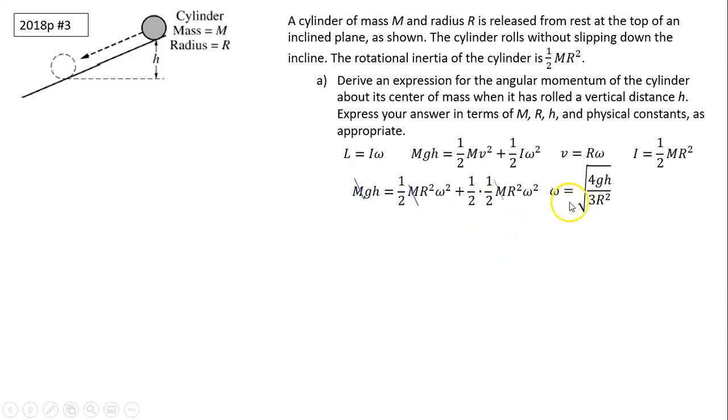So your omega should be square root of 4gh divided by 3r squared. Remember, this is omega squared. Then you have to do square root. This is your L, I times omega. Simplify it. So this 4 and this 2 can cancel because 2 equals the square root of 4. This is square root of r squared, which is r. R and this one r cancel.